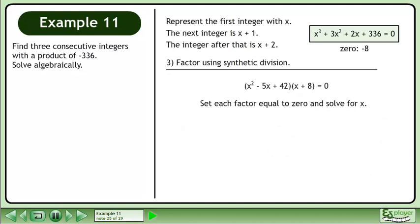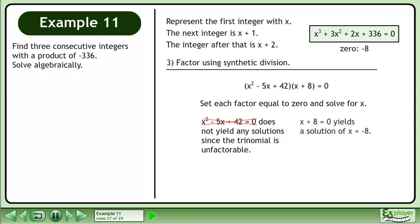Set each factor equal to 0 and solve for x. x² - 5x + 42 = 0 does not yield any solution since the trinomial is unfactorable. x + 8 = 0 yields a solution of x = -8, which is the only solution of the equation x³ + 3x² + 2x + 336 = 0.